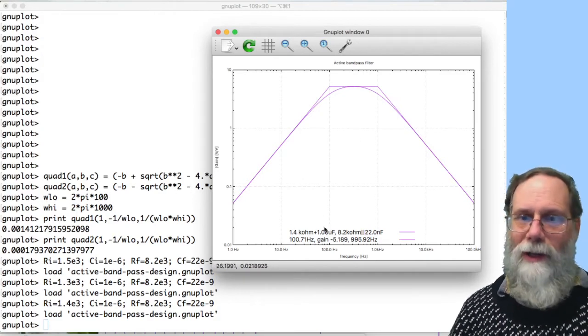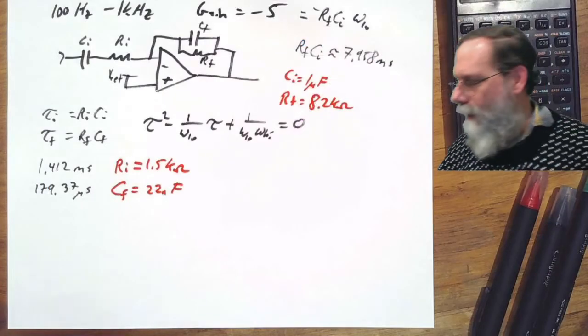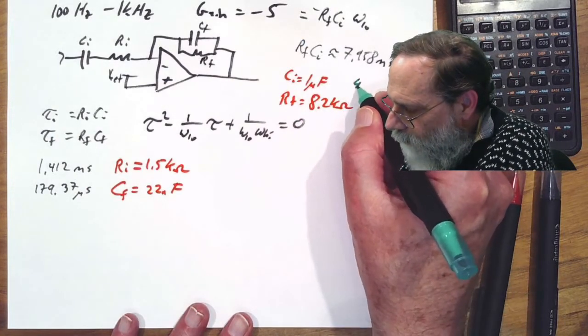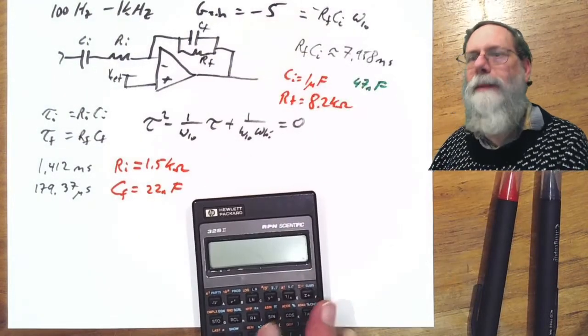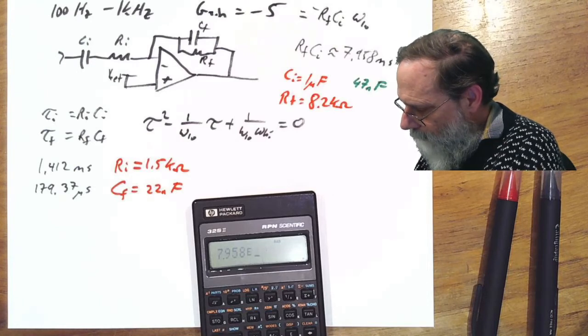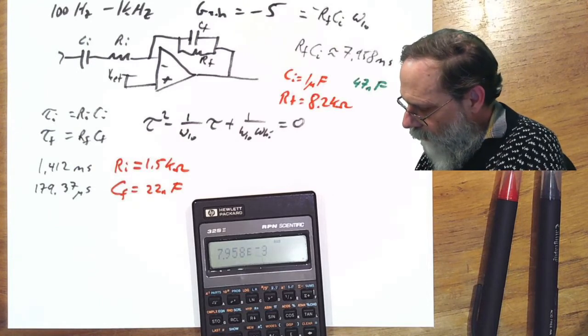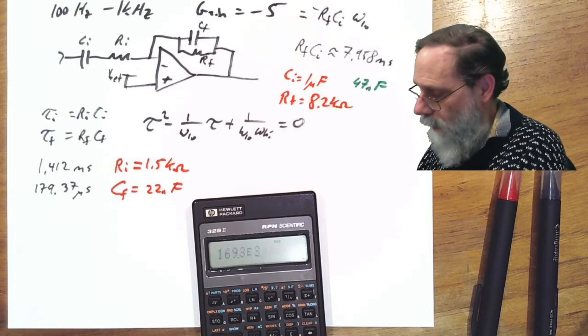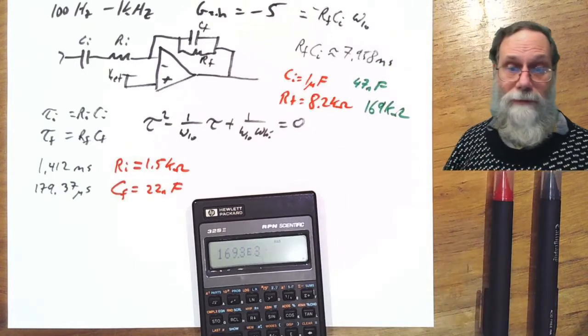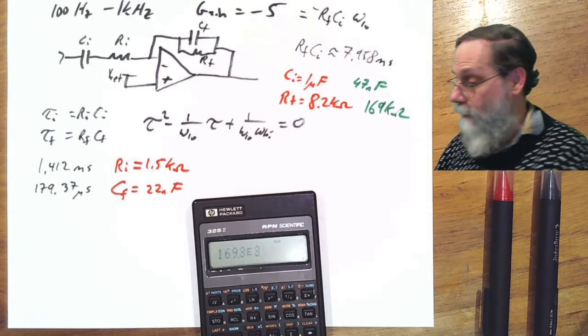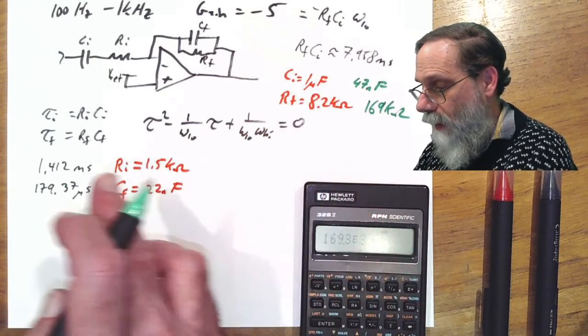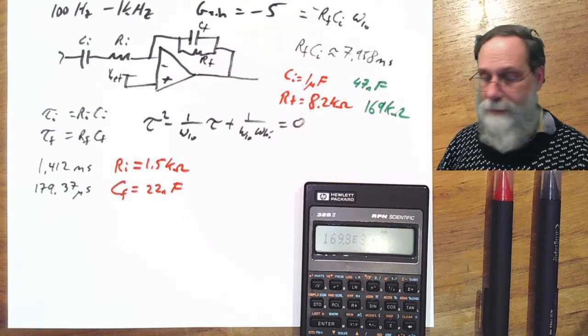Instead of microfarad, we start with 47 nanofarads. So let's say the CI is only 47 nanofarads. Can we propagate through the same way we did before getting values that make sense? So we start with 7.958 milliseconds divide by 47 nanofarads and I get 169 kilo ohms, which happens to be a fairly standard value. Now we've got to do these two, which of these constants is which. Again, if that's our big CI, that's probably going to go with the milliseconds. Well, that's not such a big CI anymore.